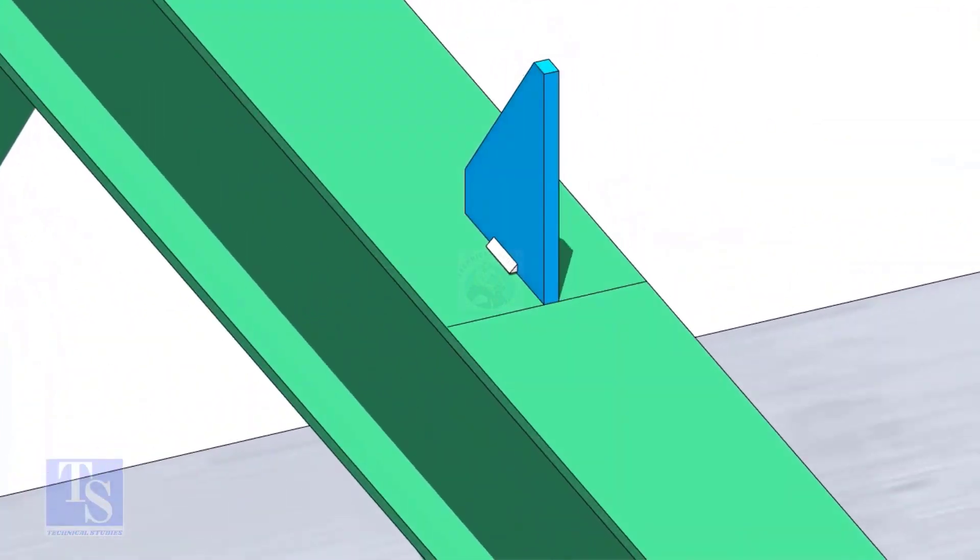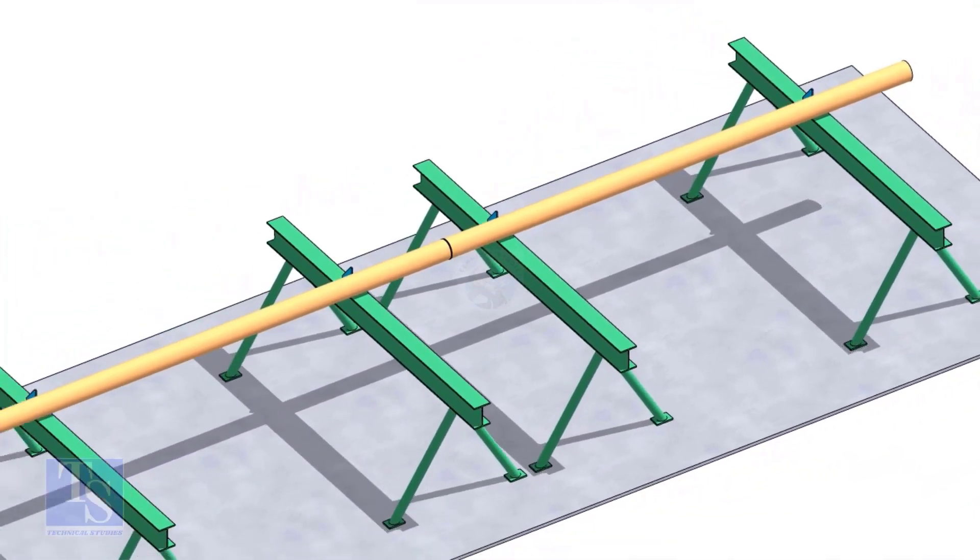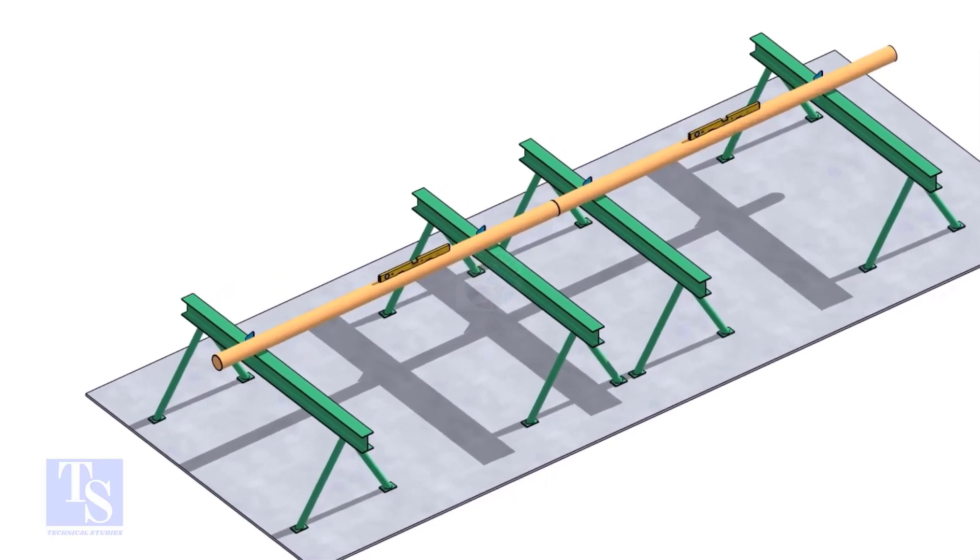Put the pipes on the stands, touching the stopper plates, as shown. The joint shall be in between the supports. Now the pipes are already straight, horizontally and vertically.